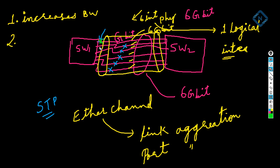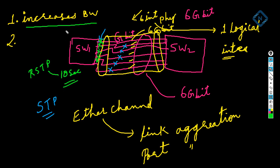But with EtherChannel, no need to wait — all links are working at the same time. If the first link goes down, all remaining five links will work. Even if the second link goes down, four links are still working. Even with only one link remaining, it is still working — no need to wait 30 to 50 seconds or less than 10 seconds. The network will not go down. EtherChannel increases bandwidth, provides redundancy, and also does load balancing by aggregating the individual links of the switch.